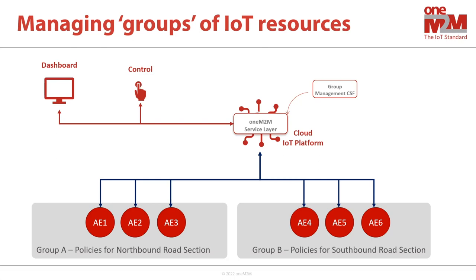One of the benefits of the group management function is to gather information and control IoT resources in definable groups. That avoids lots of interactions with each item, which saves on time and mental energy. Yes, now I can see the value of that. So how are you going to show us the group management function for today's talk?